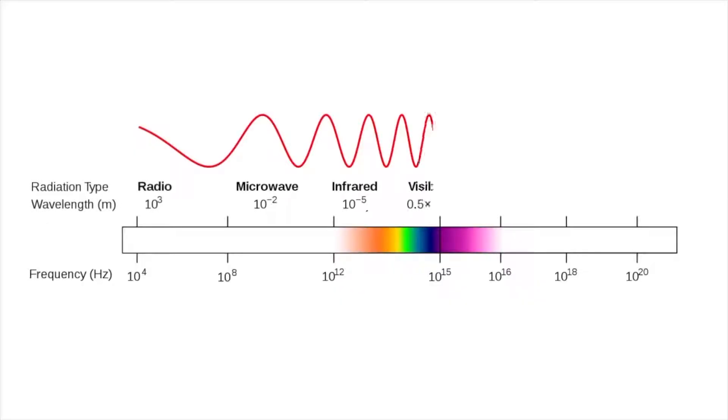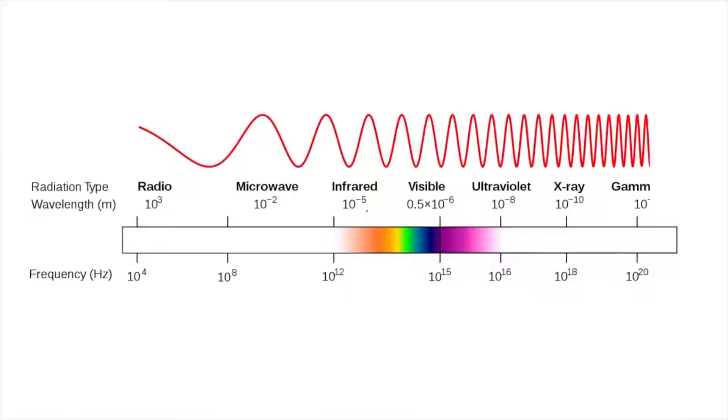Each wave travels from the sun with a different wavelength and different frequency. The light coming from the sun contains all types of electromagnetic spectrum such as microwave,